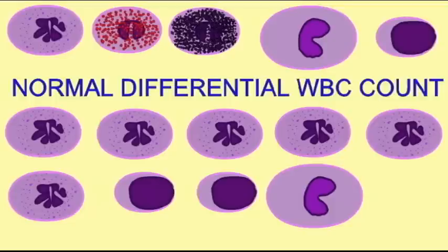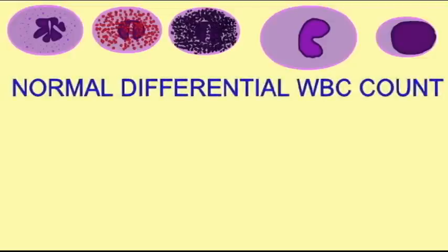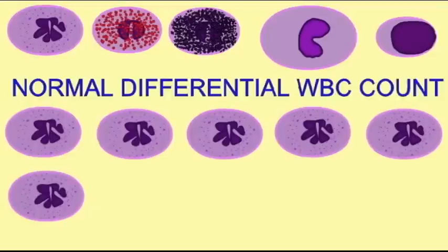Eosinophils and basophils are the rarest blood cells. Eosinophils compose 1 to 2 percent of circulating white blood cells, and basophils less than 1 percent. Eosinophil numbers can increase due to allergies, parasitic infections, and autoimmune diseases, and decrease during stress and Cushing syndrome.